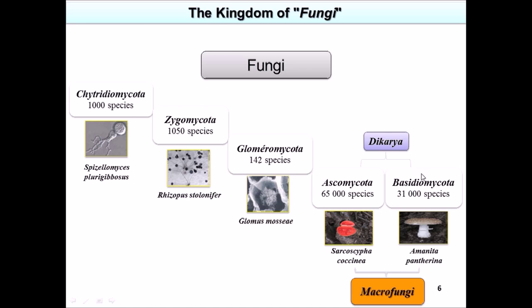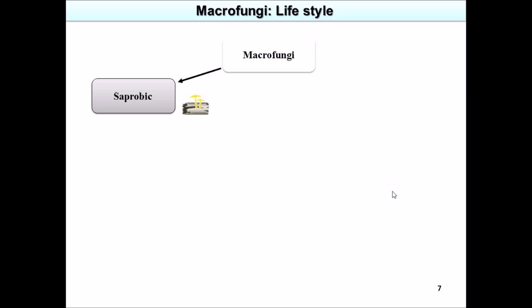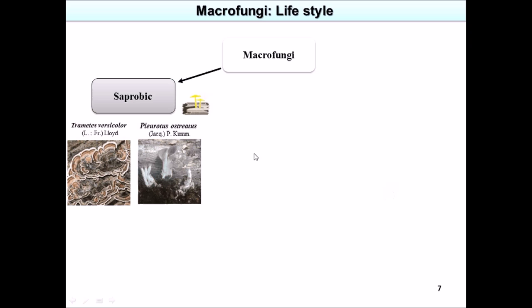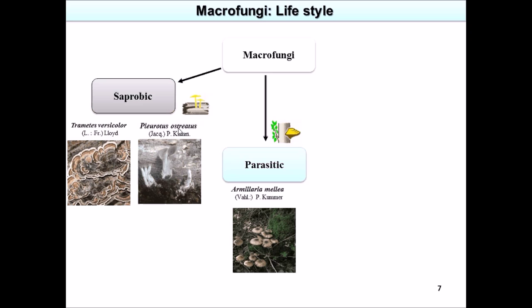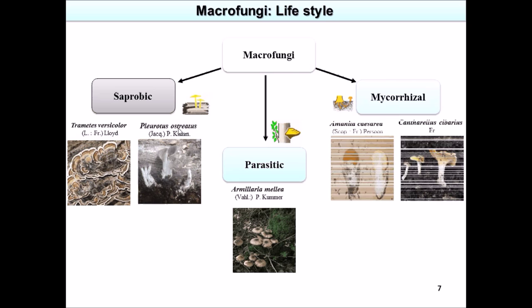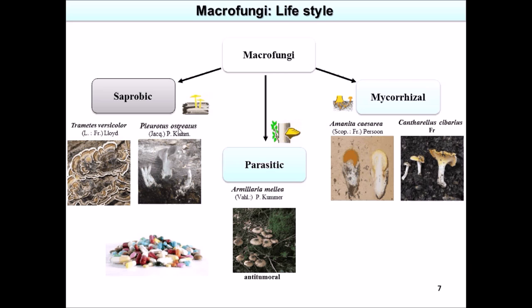Macro fungi that are Ascomycota and Basidiomycota have several lifestyles. For example, we have saprotrophic fungi like Trametes versicolor and Pleurotus ostreatus, which colonize wood and dead organic matter in soil. Other fungi are parasitic, like Armillaria mellea, which takes nutrients from other organisms without giving anything back to the host. And there are also mycorrhizal fungi, which create a symbiotic relationship with trees.